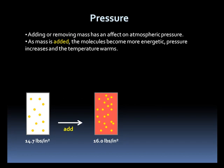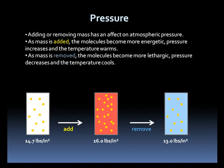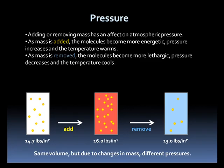Basically, the more molecules and the faster they move, the warmer it will get. Now, let's remove some mass, again keeping the volume the same. The air pressure decreases and the air cools as there are fewer molecules to bump into each other. So, changes in mass, keeping the volume the same, results in different pressure and temperature.